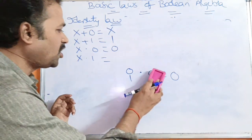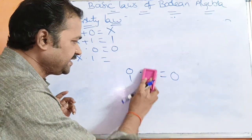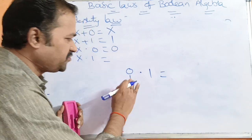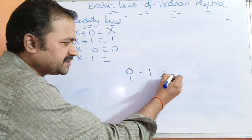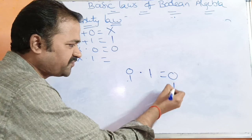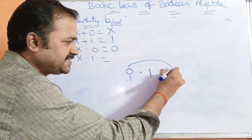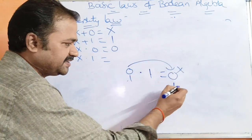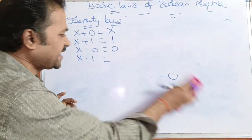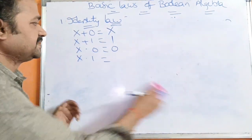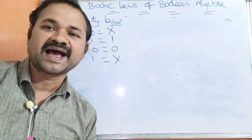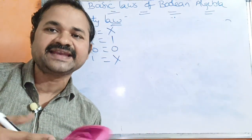Next, x dot 1: 0 dot 1 equals 0, and 1 dot 1 equals 1. So x dot 1 equals x — multiplying by 1 returns the variable itself. These four rules — x+0=x, x+1=1, x·0=0, and x·1=x — are called identity laws.